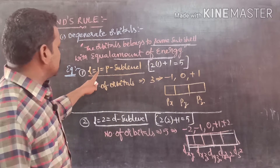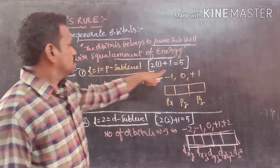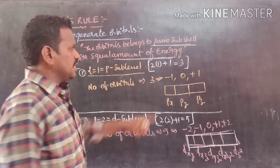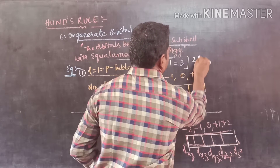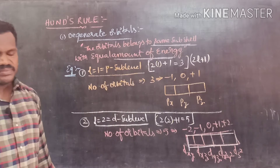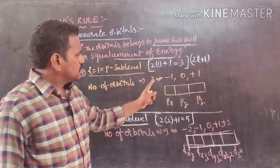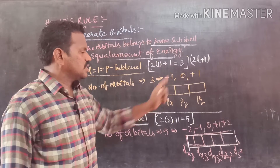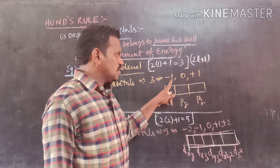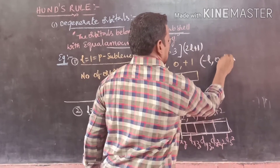For example, L is equal to 1, that is equal to the P sublevel. How many orbitals are there? It contains 3 orbitals, calculated by applying the formula 2L plus 1. As per the magnetic quantum number, their values are minus 1, 0, and plus 1 — because they start at minus L, 0, and plus L.